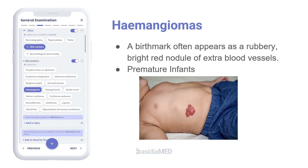Hemangioma is a birthmark that often appears as a rubbery, bright red nodule of extra blood vessels. It can appear on the face, scalp, chest, or back. Hemangiomas are seen more frequently among premature infants. They are usually present externally, but may also be present in the central nervous system.